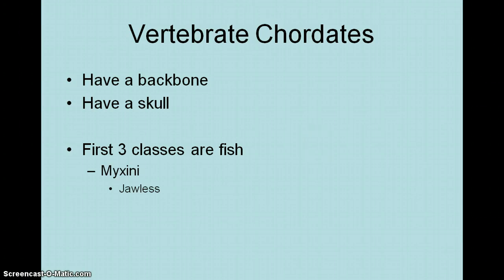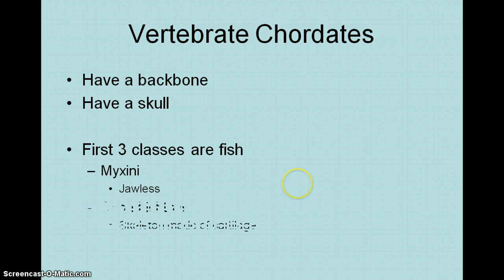The first fish class is called Myxini. These are going to have a little bit of strange names, like our invertebrate chordates — that's just the way it is. They are referenced as jawless fish. They're fish that have the four characteristics of chordates and they have a backbone, but they don't have a jaw.